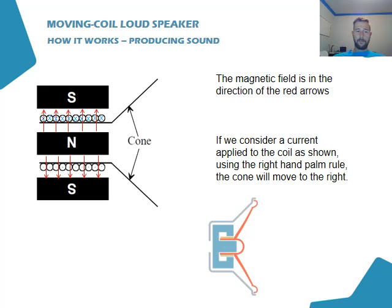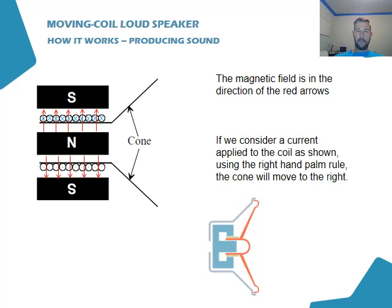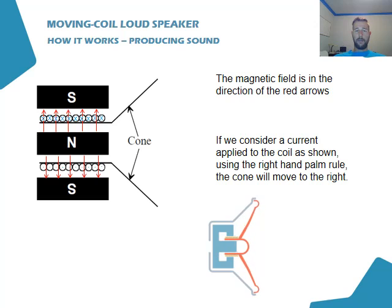If the current is flowing into the page, we use the right-hand palm rule. We point our hand so our fingers point up to represent the magnetic field, and our fingers point into the page representing the current direction in the wire, which means our palm points in the direction of the force. In this particular case, the force will be to the right.